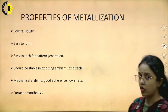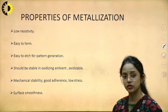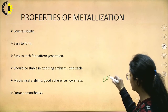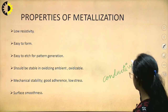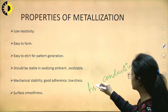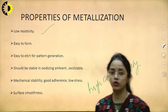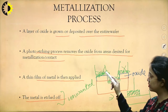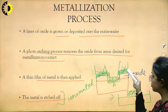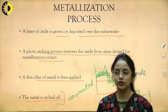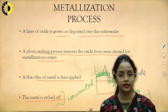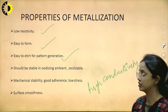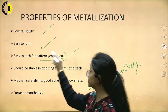Properties of metallization: since it is used for conduction, we need high conductivity and therefore low resistivity. It should be easy to form and easy to etch for pattern generation — if we cannot remove the unwanted metal, we cannot confine it to the specific region. So it should have the property that you can easily etch it to achieve a specific pattern.